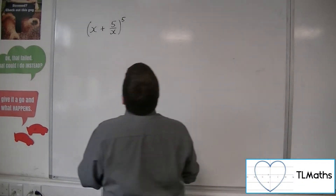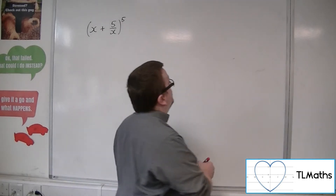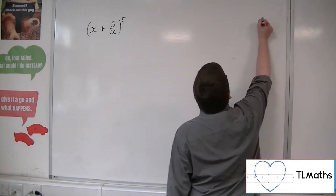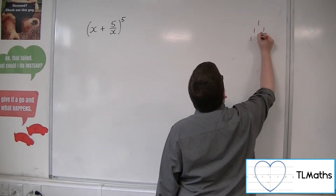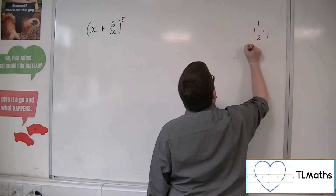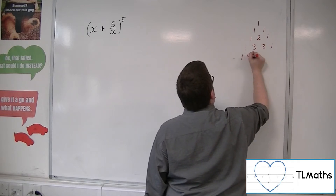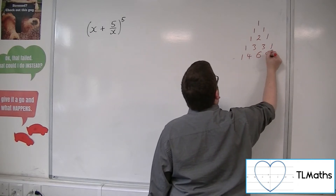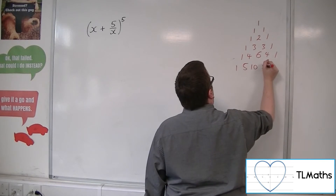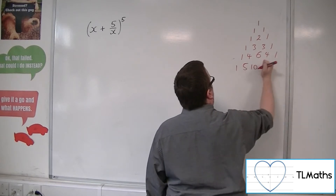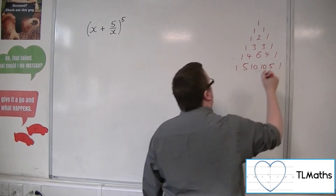First thing we really want to do is write out Pascal's triangle. So we have 1; 1, 1; 1, 2, 1; 1, 3, 3, 1; 1, 4, 6, 4, 1; and 1, 5, 10, 10, 5, 1.